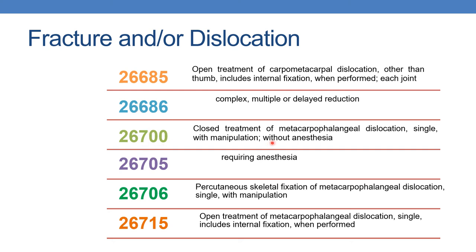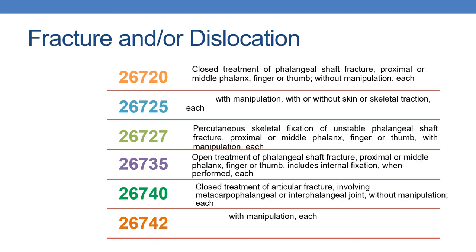Next is 26700: closed treatment of metacarpophalangeal dislocation, single, with manipulation, without anesthesia. Whenever anesthesia is required, report 26705. Whenever percutaneous skeletal fixation of metacarpophalangeal dislocation with manipulation is done, report 26706. Open treatment of metacarpophalangeal dislocation including internal fixation is reported with 26715.